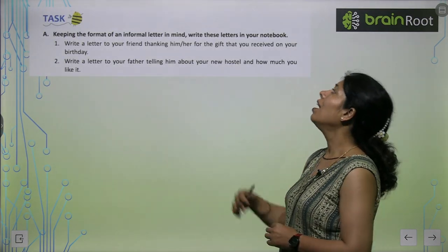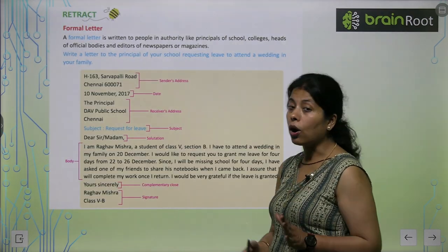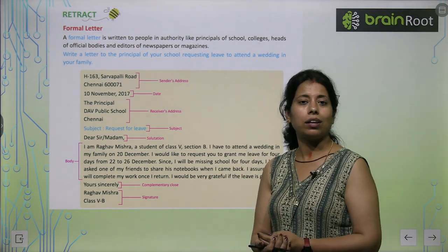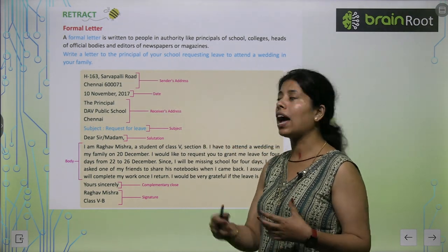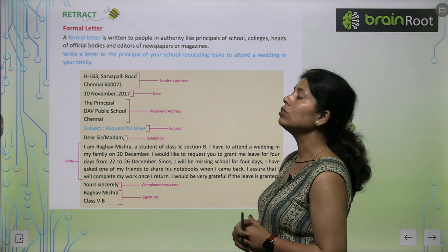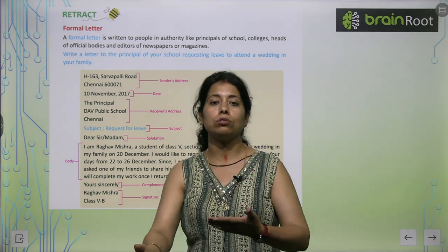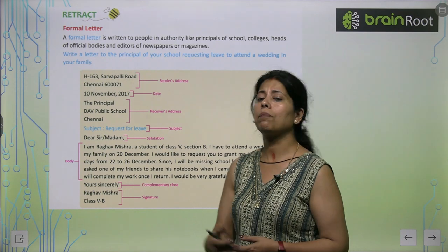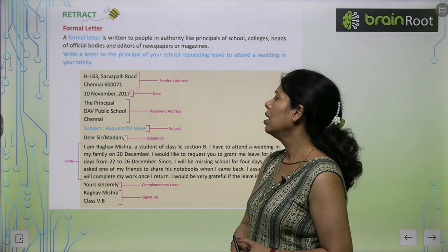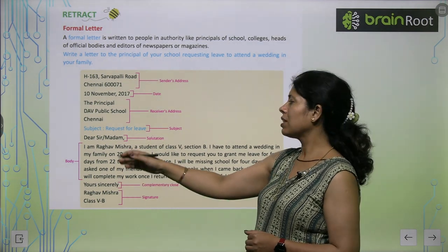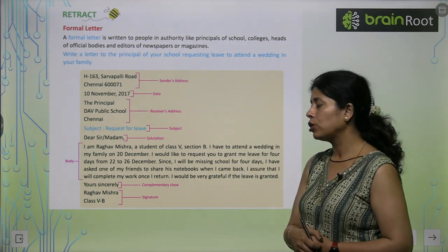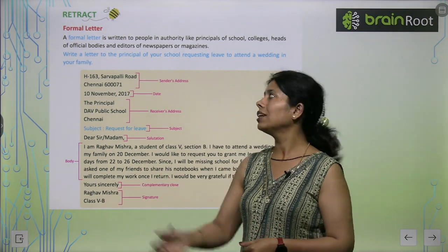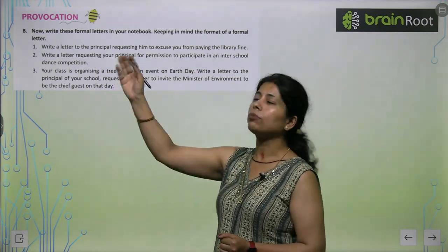Keeping the format of an informal letter in mind, write the given letters. Formal letters are very important for official purposes. Write a letter to the principal of your school requesting leave to attend a wedding in the family. First, write your address: S163, Sargapalli Road, Chennai 6007, then the date, then the receiver's address - the principal. Write the subject matter, such as 'Request for leave.' Then the salutation and body: 'I am Raghav Mishra, a student of class 5, section B. I have to attend a wedding in my family on the 20th, so I would like to request you to grant me leave.' Close with 'Yours sincerely' and your signature. Now write those formal letters in your notebook. Thanks for watching.